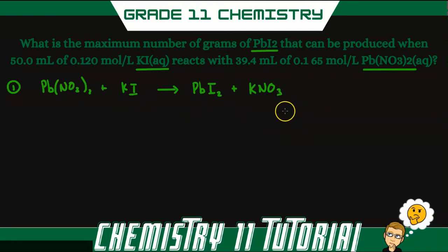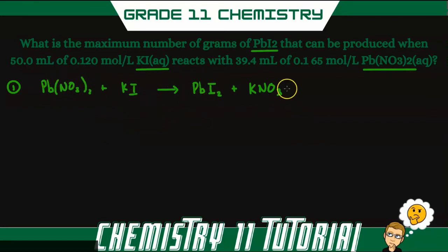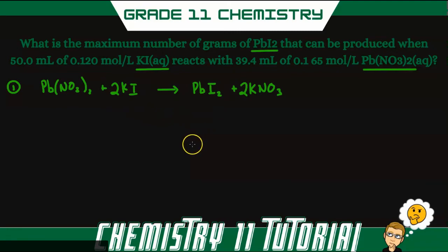Now let's balance the equation. We have one lead on the left and one lead on the right — that's good. We have two nitrates on the left and only one on the right, so I'll put a coefficient of two there. Now we have two potassium on the right, so I'll put a two on the left. Finally, we have two iodines on each side, so the equation is balanced.